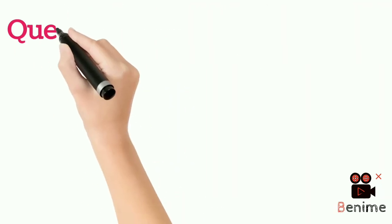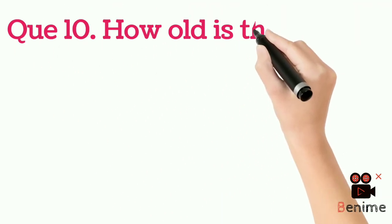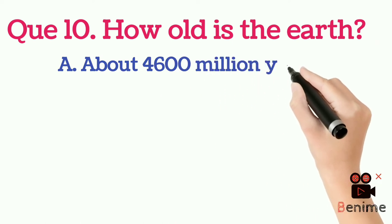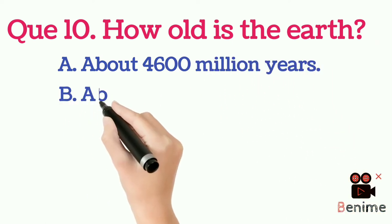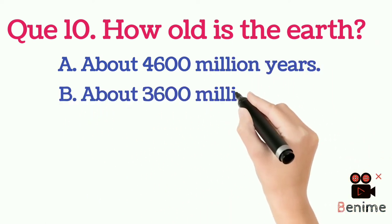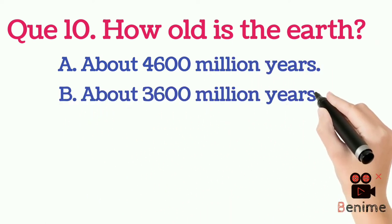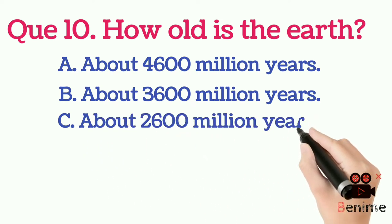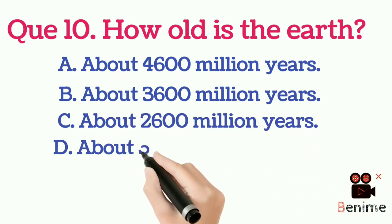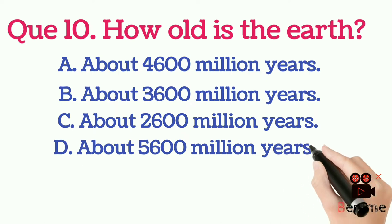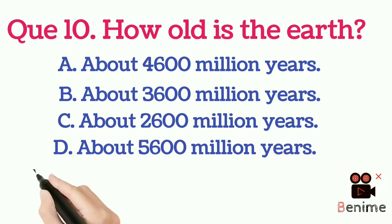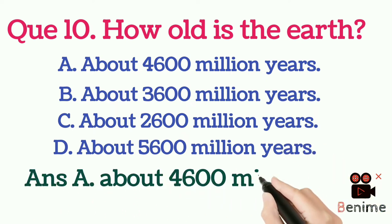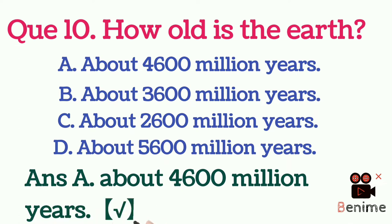Question 10: How old is the Earth? A. About 4,600 million years. B. About 3,600 million years. C. About 2,600 million years. D. About 5,600 million years. Answer A: 4,600 million years.